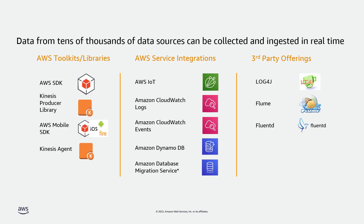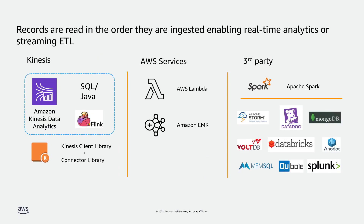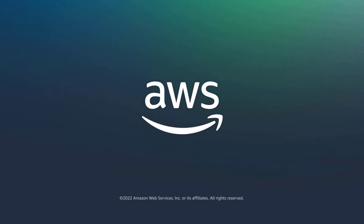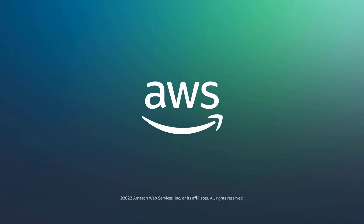On the data ingestion side, Kinesis Data Streams can be connected with tens of thousands of data sources from Amazon and other data producers. On the data consumer side as well, Kinesis Data Streams can be connected with many applications from Amazon and third-party providers. You can learn more about this topic in the description and links for this video. Thanks for watching — now it's your turn to try.